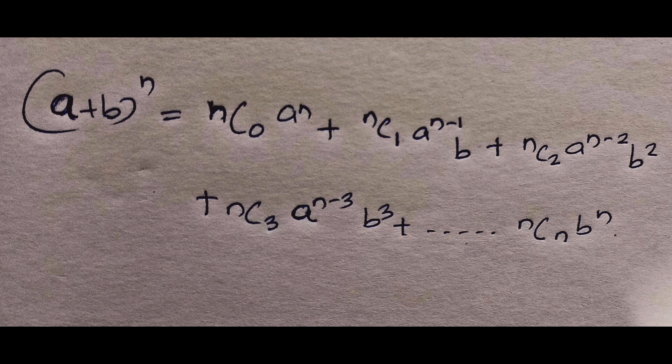A plus B the whole squared gives A squared plus 2AB plus B squared. In the expansion of A plus B the whole raised to N, the total number of terms is N plus 1. For A plus B whole squared, N is 2, so there are 3 terms - that is 2 plus 1 equals 3 terms.